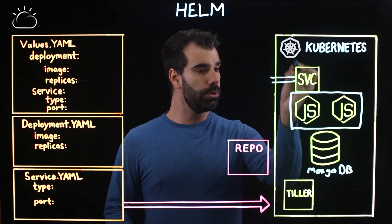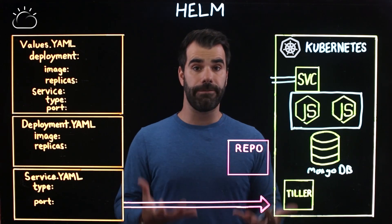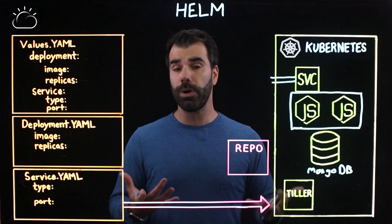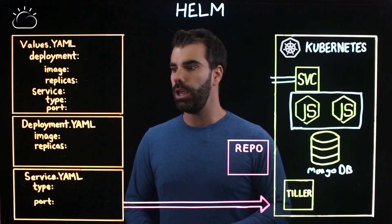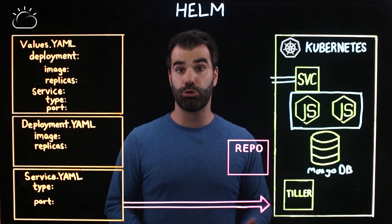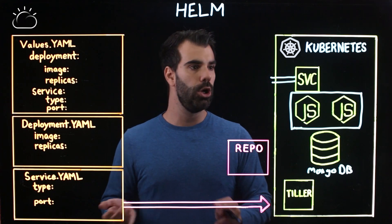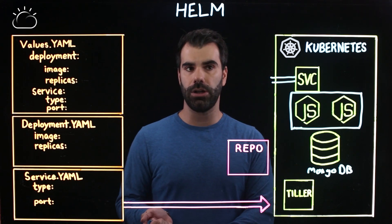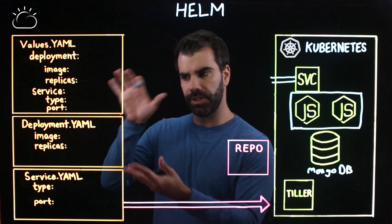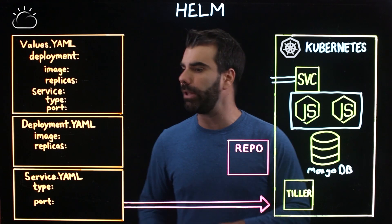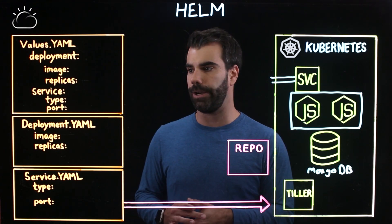In order to deploy this kind of application stack, one way you can define this with Kubernetes is by writing a couple of YAML files to describe what your deployments are going to look like, what your service is going to look like, etc. This is a fairly pared-down example, but let's go through some of the key elements.